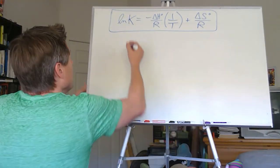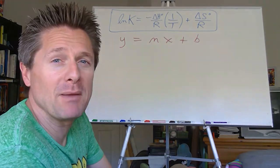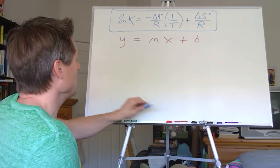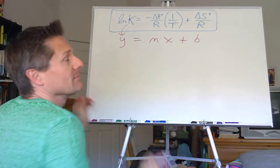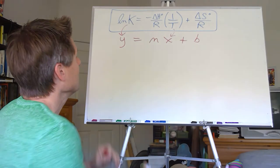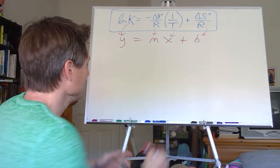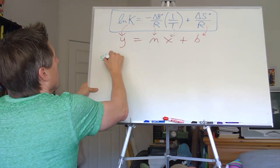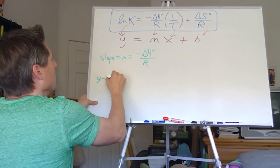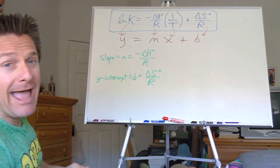y = mx + b, people! The log of the equilibrium constant is y, the inverse temperature 1/T is x, the slope m is –ΔH°/R, and the y-intercept b is ΔS°/R. So: slope = –ΔH°/R and y-intercept = ΔS°/R.